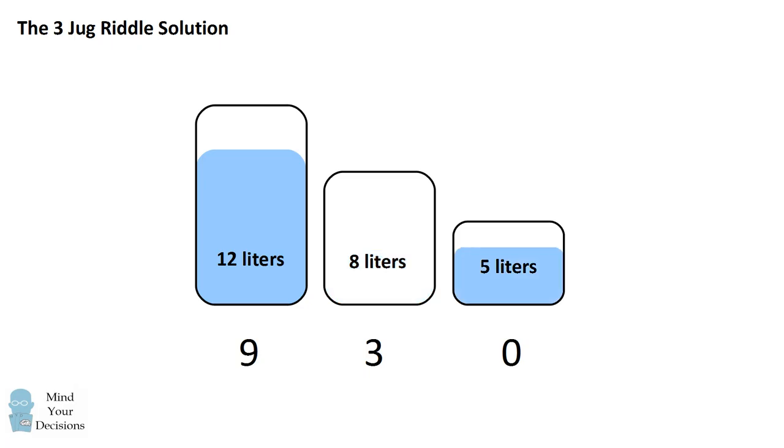We transfer the 3 liters from the 8 to the 5-liter jugs. We now fill up the 8-liter container from the 12-liter jug. So that leaves 1 liter of milk in the 12-liter jug, and we have 8 liters filled in the 8-liter jug.